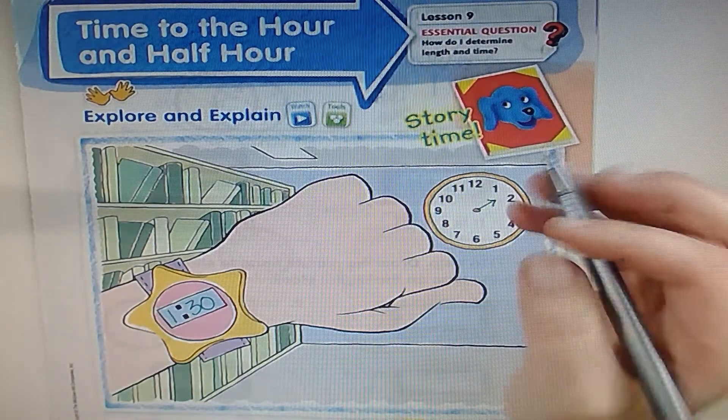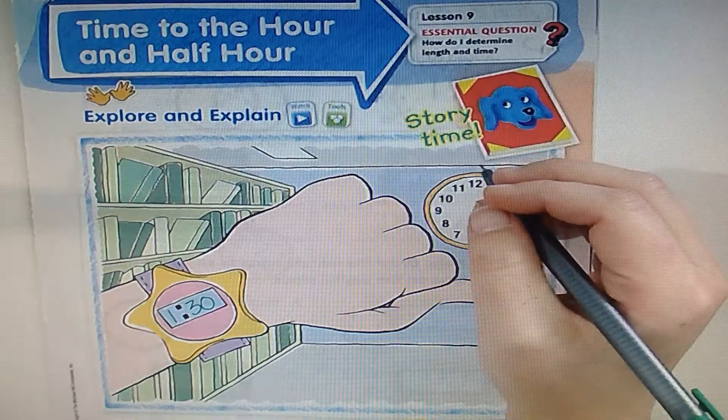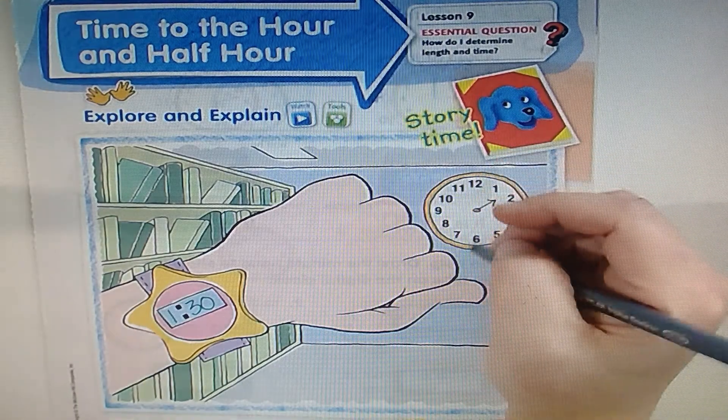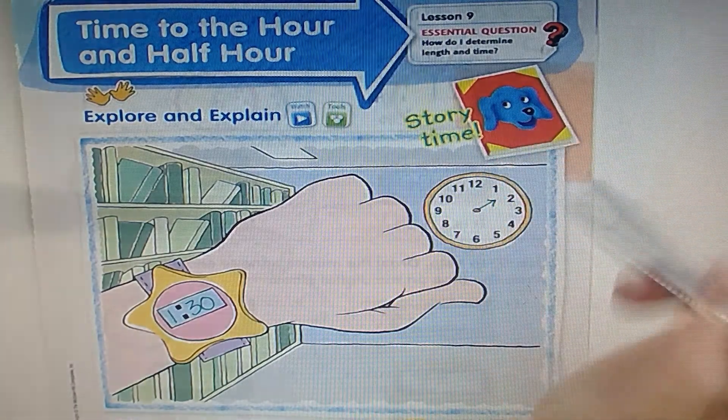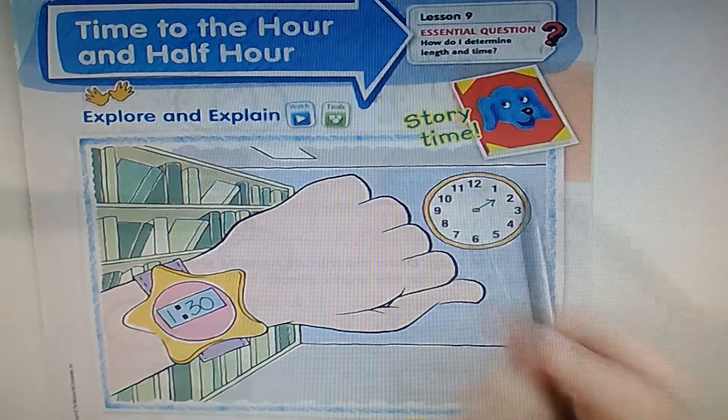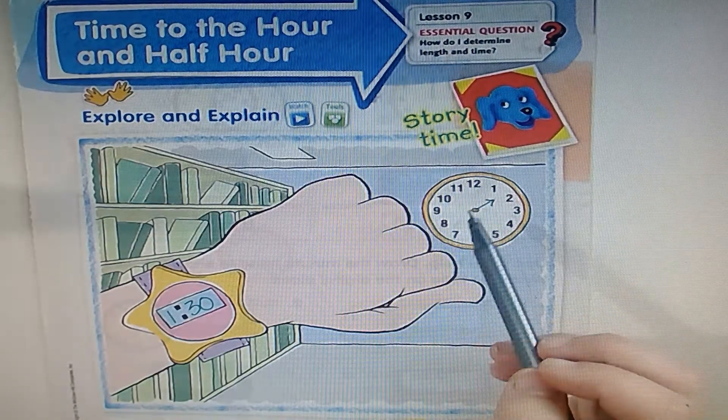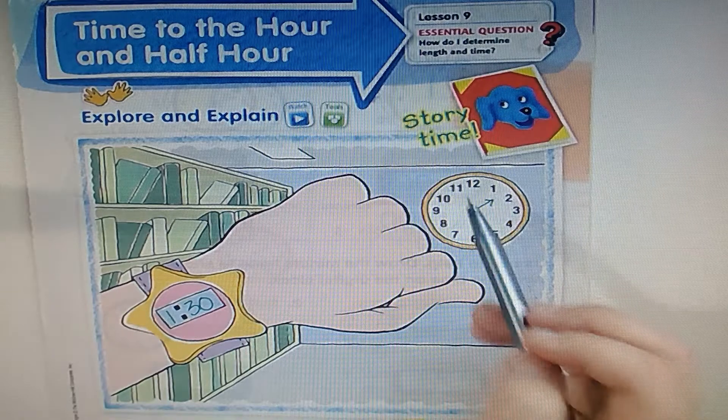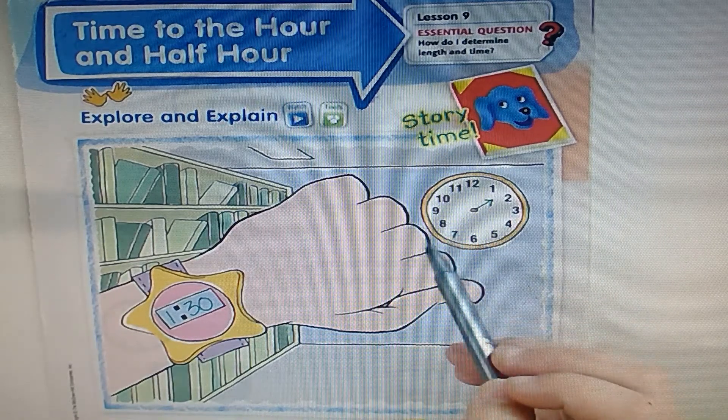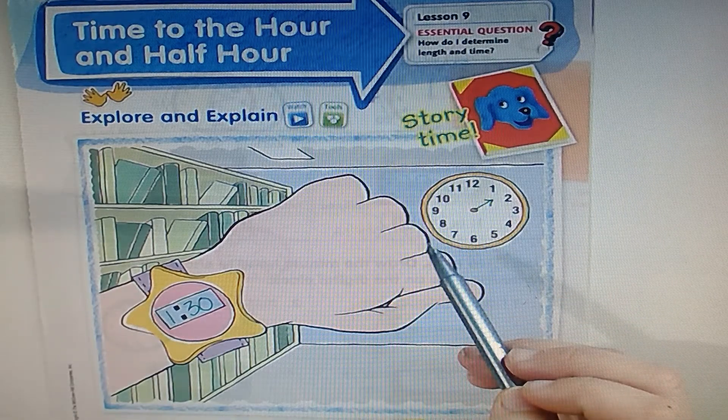Now the minute hand, also known as the long hand, is going to be showing us 30 minutes. But remember, there's no 30 on the clock, there's no written 30. We have to know that each of these numbers is five minutes when we're talking about the minute hand.